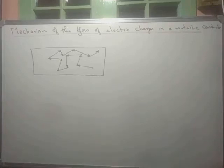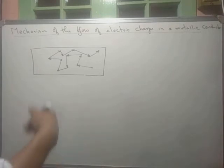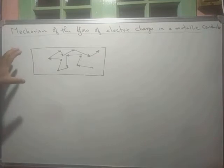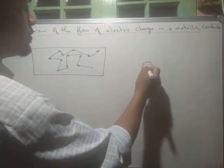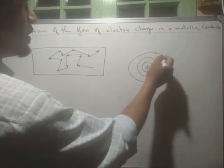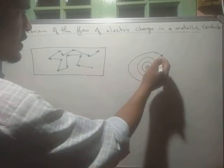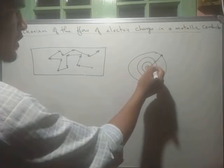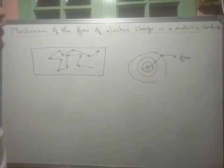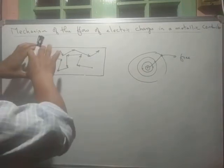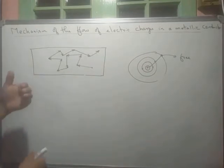Let's look at the mechanism of the flow of electric charges in a metallic conductor. In a metal, we have a large number of free electrons — those electrons which can be easily detached from the nucleus. If this is an atom with a nucleus, the electrons in the outermost shell are at a far distance and become free from the attraction of the nucleus. This type of electron is called a free electron.